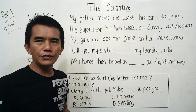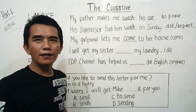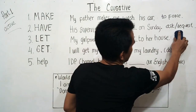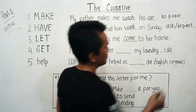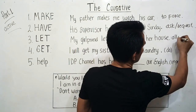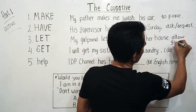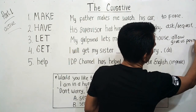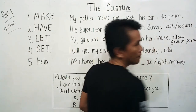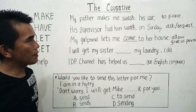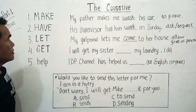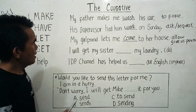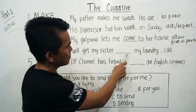So 'let' here means to allow or give us permission. All right, we are going to number four — causative 'get': 'I will get my sister ___ my laundry.' The main verb is 'do.'